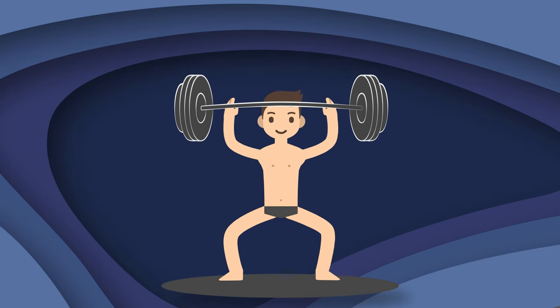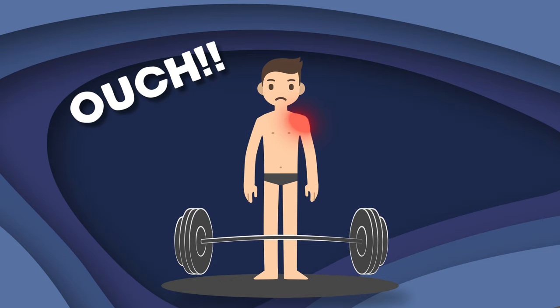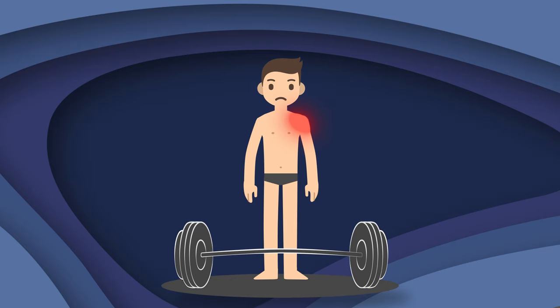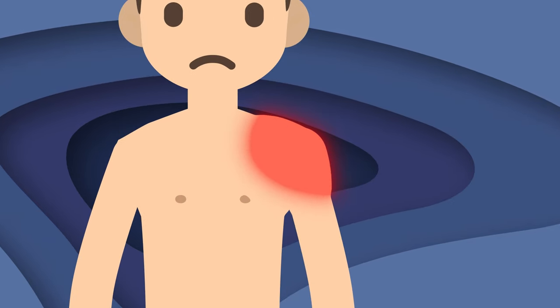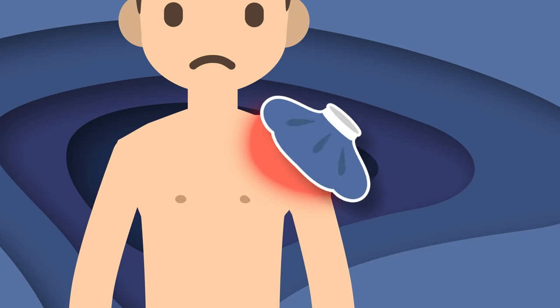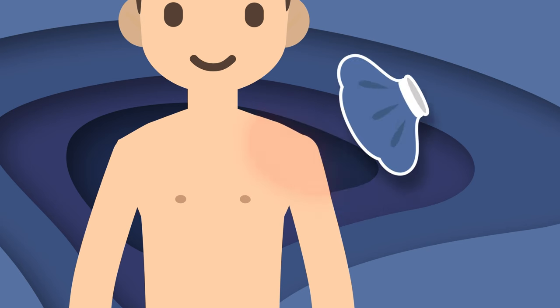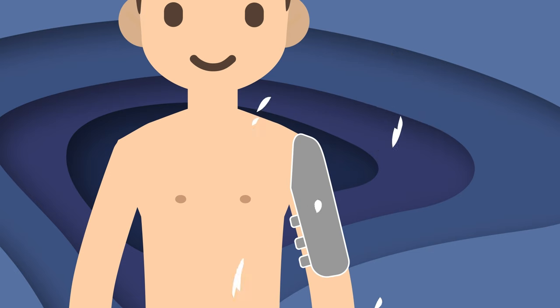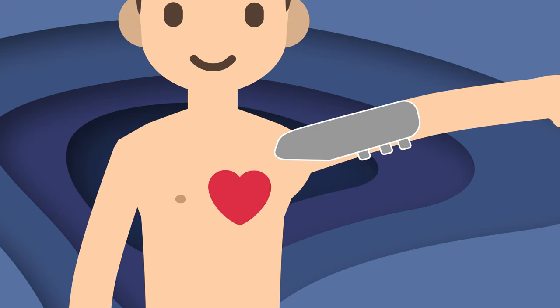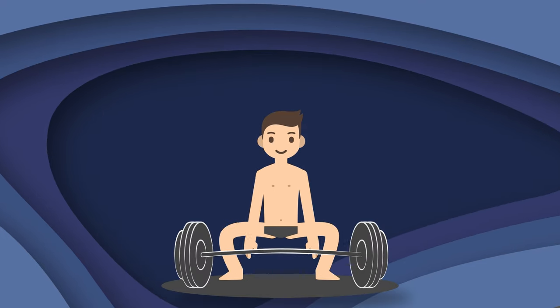First you should rest and avoid using the affected muscle. Applying ice to the area to reduce swelling to the pull. A compression bandage helps with swelling and provides support. Elevate the injured area above your heart as a helpful resort.